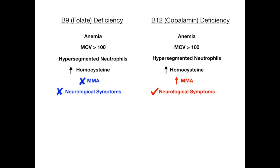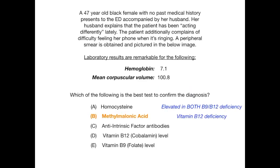Referring back to our question, the patient has been acting differently — we're seeing neuropsychiatric changes — and she's also having trouble feeling her phone when it's ringing, meaning she cannot feel vibration. These are very classic symptoms associated with B12 deficiency, in fact termed subacute combined degeneration. B12 is involved in the synthesis of myelin necessary for normal neuropsychiatric functioning, so in a B12 deficiency you lose the ability to adequately myelinate those nerves, resulting in subacute combined degeneration. In a nutshell: in a B12 deficiency, you see neurological symptoms and have an elevated MMA — so the correct answer was elevated MMA.